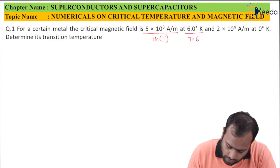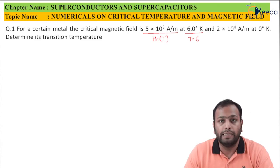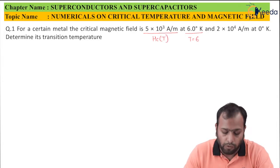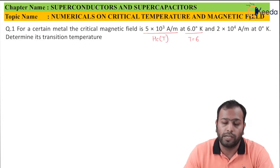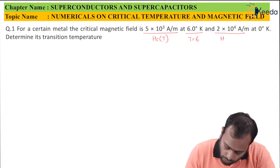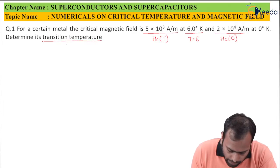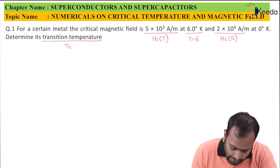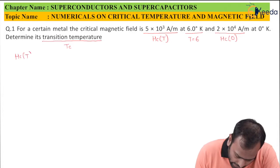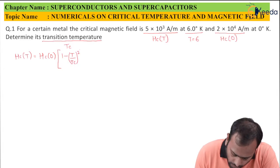This temperature is equal to 6. Always remember: if the temperature is given in degree centigrade, do not forget to convert it into Kelvin, because in solving the numericals we will be using the formula with Kelvin. The critical magnetic field at T=0 is Hc(0). We need to determine the transition temperature Tc. The formula is: Hc(T) = Hc(0) × [1 − (T/Tc)²].